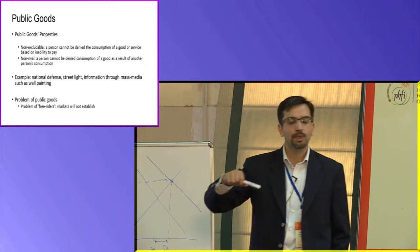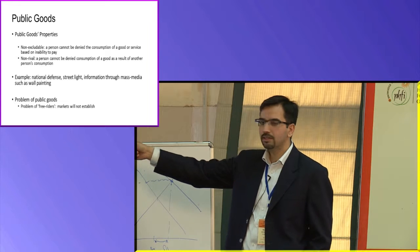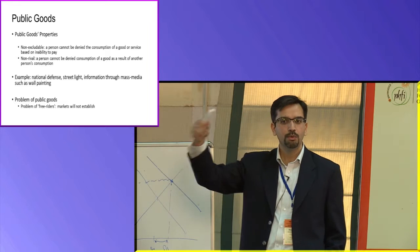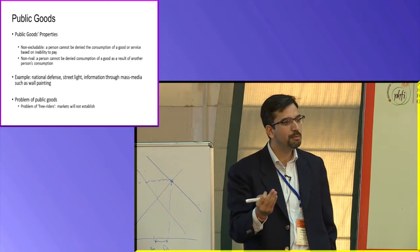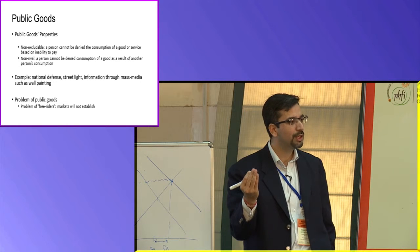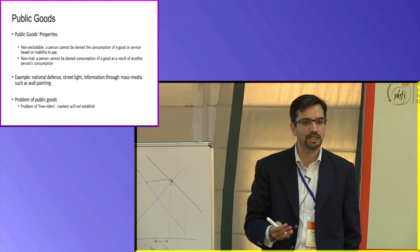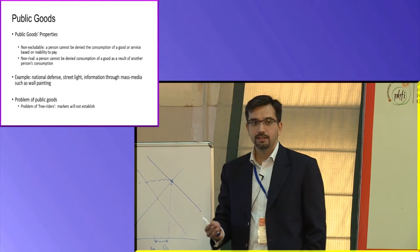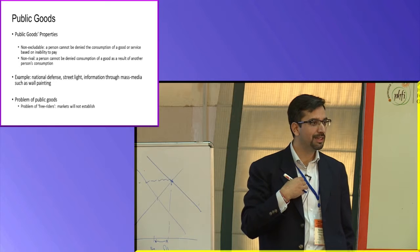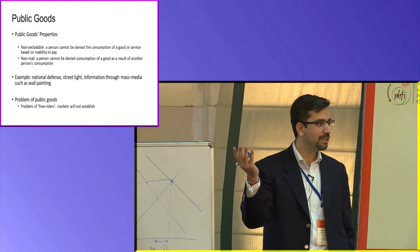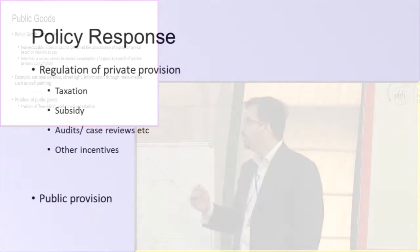Some goods and products in healthcare — the classical examples being national defense — even people who are very poor and cannot pay tax at all get the benefits of the security of the army which is set up through tax money. The fact that they are protected does not mean I am not protected — it is everybody's protection. These are the kinds of policy responses that are needed.